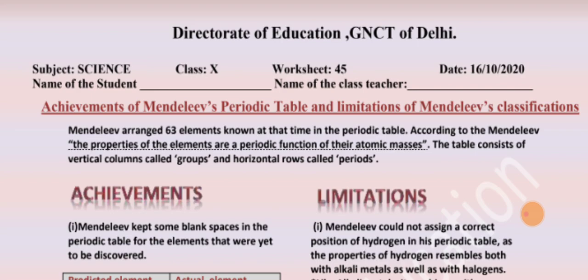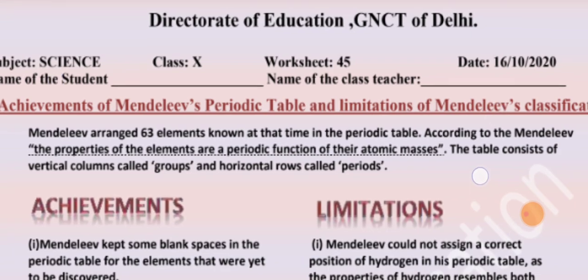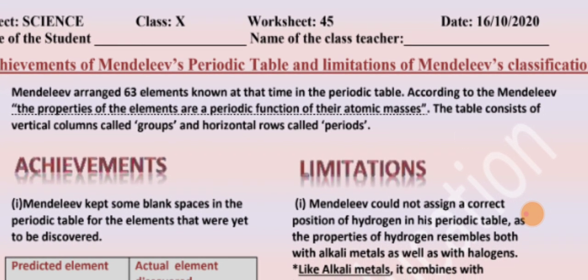Mendeleev arranged 63 elements known at that time in the periodic table. According to Mendeleev, the properties of the elements are periodic functions of their atomic masses. The table consists of vertical columns called groups and horizontal rows called periods.